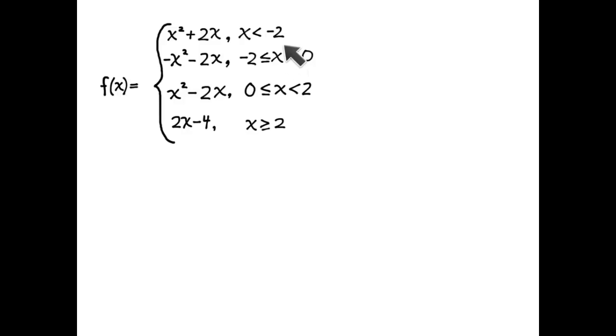Before we start evaluating its derivative, we need to check whether it's continuous at its junction points. Continuity is a necessary condition of differentiability. How can I determine whether it is continuous at the first junction point x equals negative 2?